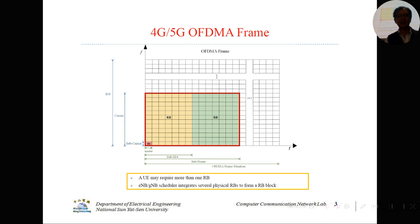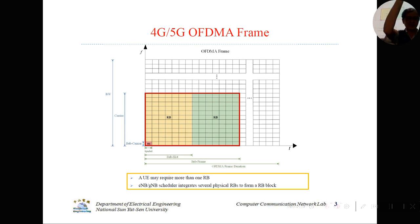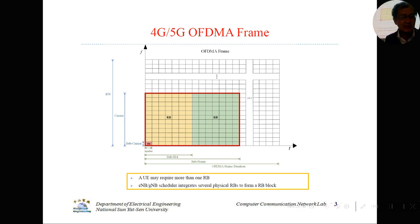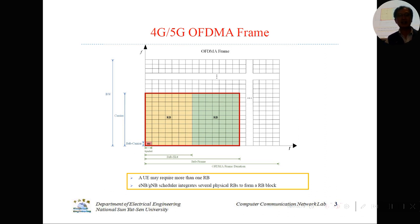This diagram shows a 4G or 5G OFDMA frame. The y-axis is the frequency subcarrier and the x-axis is the time domain. You can see there is a resource block. One resource block consists of 84 resource elements. The smallest element is called the resource element, which is a very basic resource under the OFDMA frame.